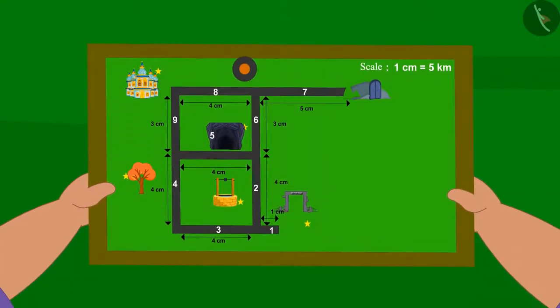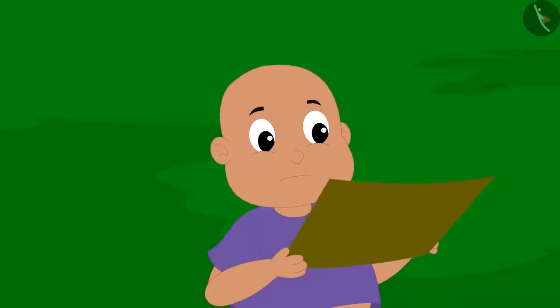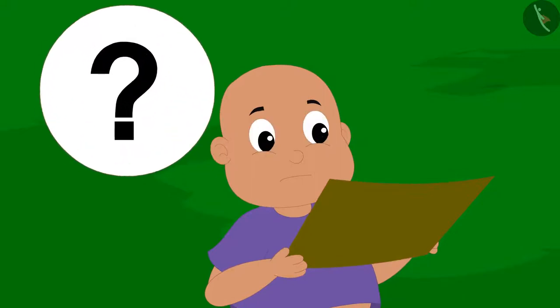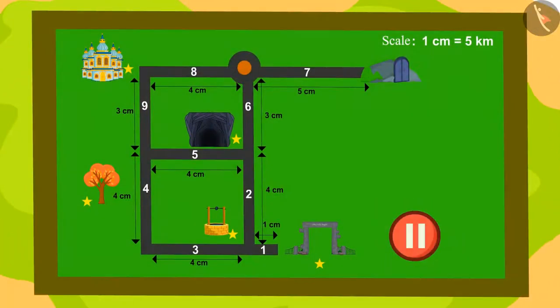Then he recalled that he has a map of the Ulta Pulta village. But Bablu did not know how to read the map. Can you help Bablu to get out of the Ulta Pulta village? Pause the video and look for a way to get out of the village.